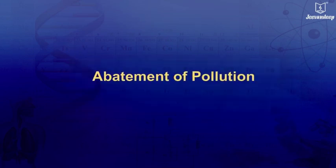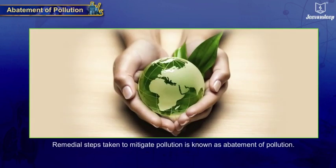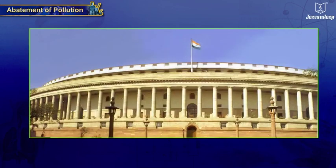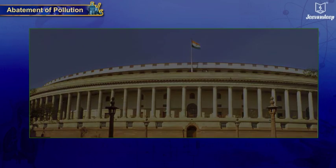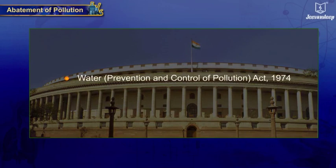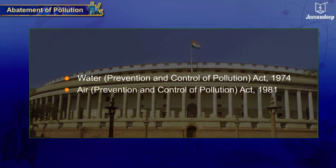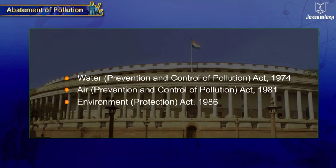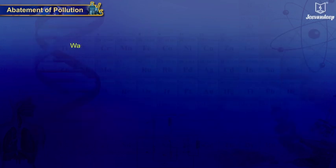Abatement of pollution — remedial steps taken to mitigate pollution are known as abatement of pollution. The Government of India has formulated laws for the prevention, control, and abatement of pollution. Some of these laws are: the Water (Prevention and Control of Pollution) Act, 1974; the Air (Prevention and Control of Pollution) Act, 1981; and the Environment Protection Act, 1986.